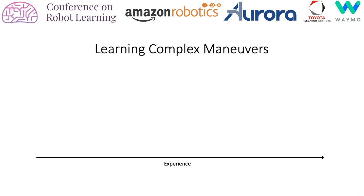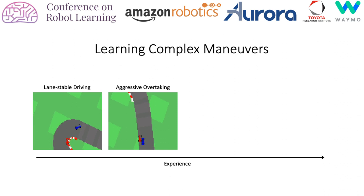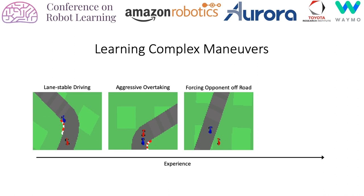As the training evolves, the agent learns more and more complex maneuvers: starting from lane-stable driving, aggressive overtaking, forcing an opponent off the road, and even a pit maneuver.